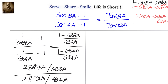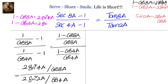We know 1 - cos2a = 2sin²a, so 1 - cos8a = 2sin²4a, and 1 - cos4a = 2sin²2a. Also we know sin2a = 2 sin a cos a, so sin4a = 2 sin2a cos2a.